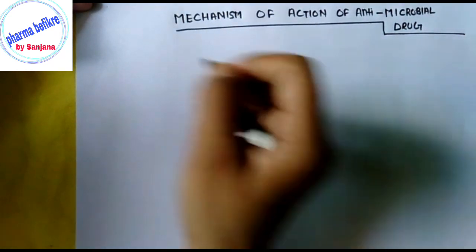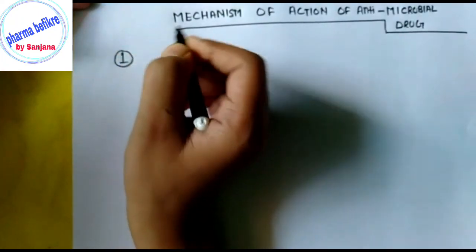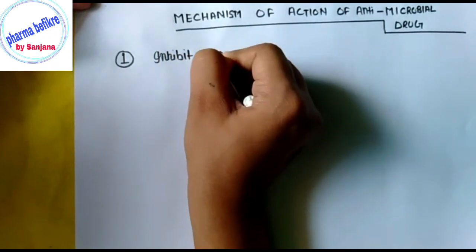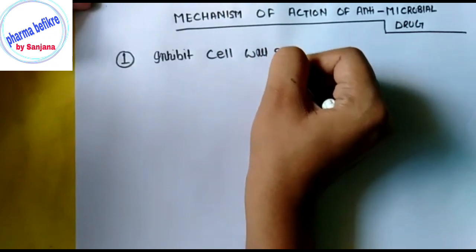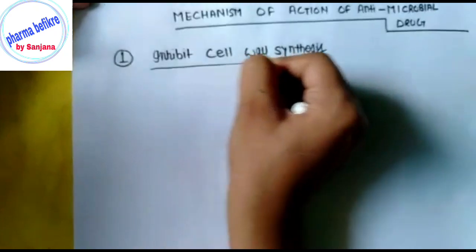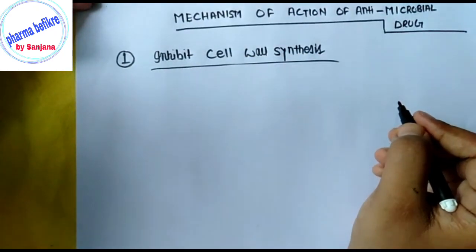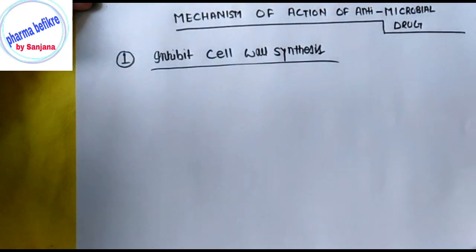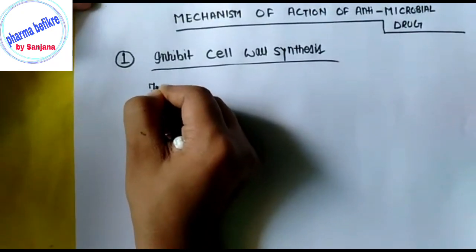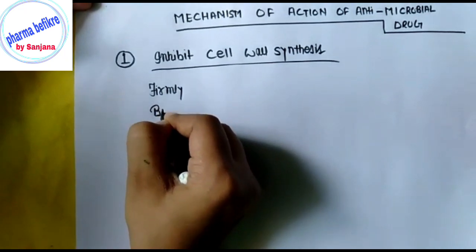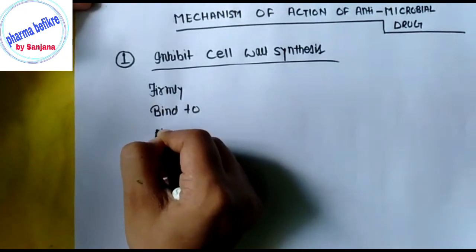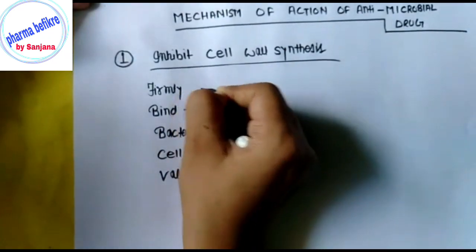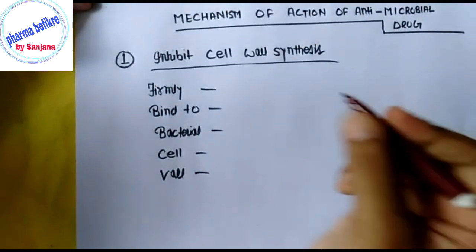In the first group, that is inhibition of cell wall synthesis — to inhibit the cell wall, the drug has to bind to it. So the mnemonic is: 'Firmly bind to bacterial cell wall.' Here the spelling of 'val' is V-A-L.